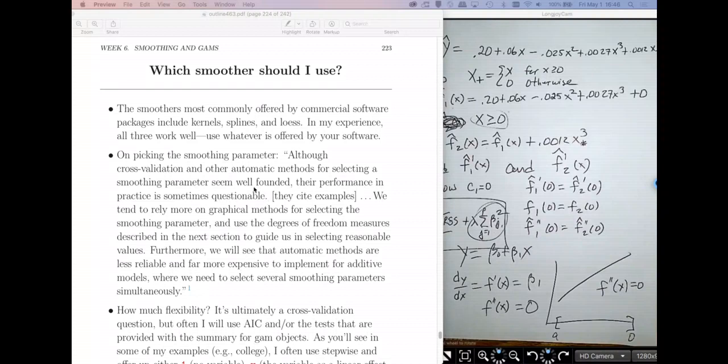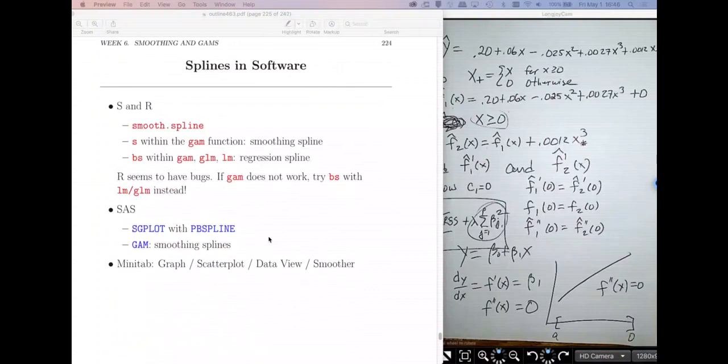How do you pick the smoothing parameter? So I pulled a quote from Hastie Tibshirani's book. And what they basically say in this quote, you can read it yourself, is you probably want to use cross-validation, but that's not always possible because a lot of the methods that we're going to study later on this week are too complicated to really do cross-validation all the time on. And so therefore, what we're going to do is often we'll just use our eyes, plot it, and if it looks about right, we're happy.